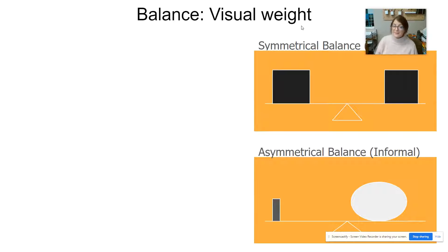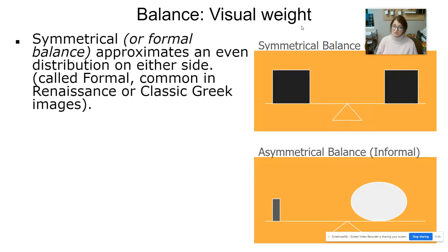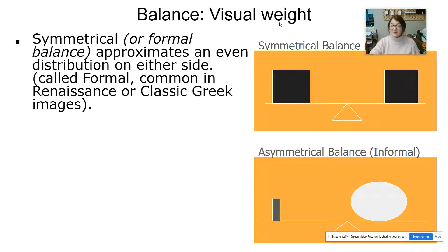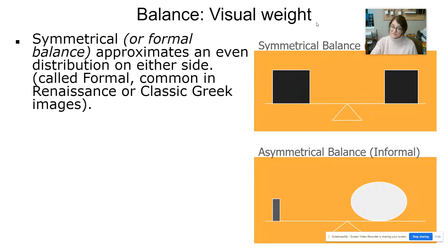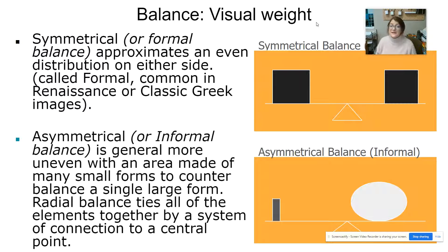The first principle we're going to talk about is balance. Balance is all about visual weight. The first type is symmetrical, which is a more formal approach to balance — it evenly distributes on both sides. As you can see in this image, it is the same on both sides. This formal approach is common in Renaissance or Greek images.